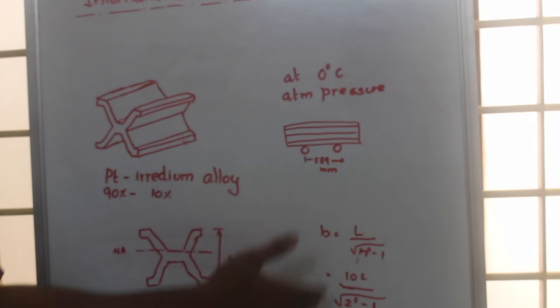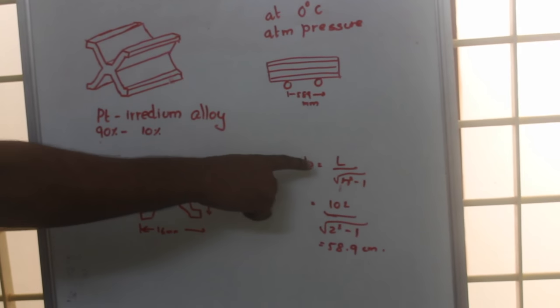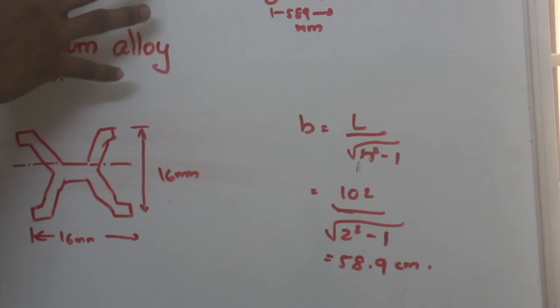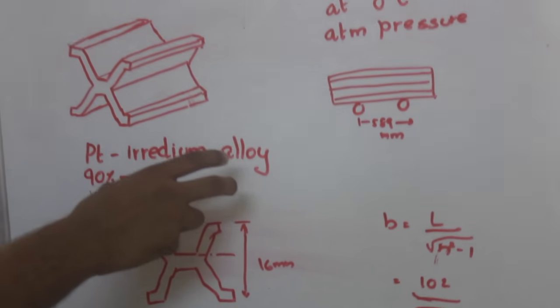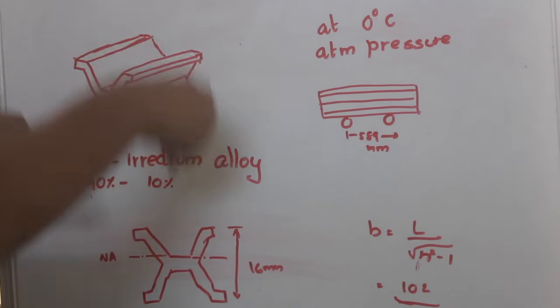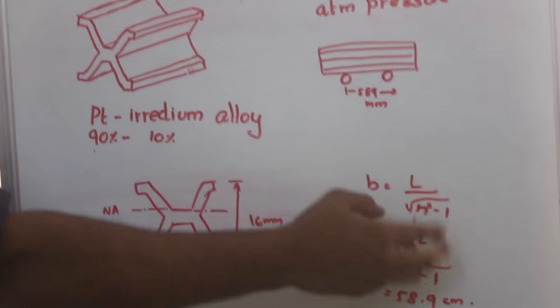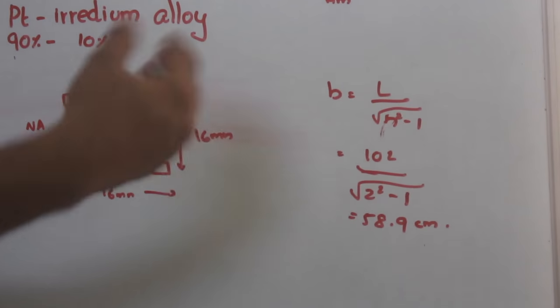The distance between these two supports can be found by using Airy's formula which gives b equals l by root of n square minus 1, where l is the length of the Tresca section. Here we know it is 102 centimeter. Even though the distance between the scribing is 100 centimeter, the total distance is 102 centimeter, and n means the number of supports.